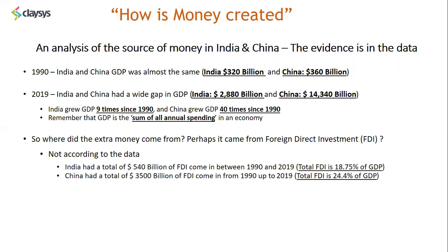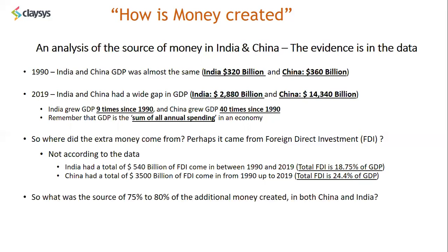This FDI makes up about 18.75 percent of India's GDP today. China had a total of 3.5 trillion dollars of FDI come in between 1990 and 2019, making up 24.4 percent of the Chinese GDP. So what was the source of 75 to 80 percent of the additional money created in both China and India? The money that came in from external investors was only between 20 to 25 percent — so where did all the other money come from?